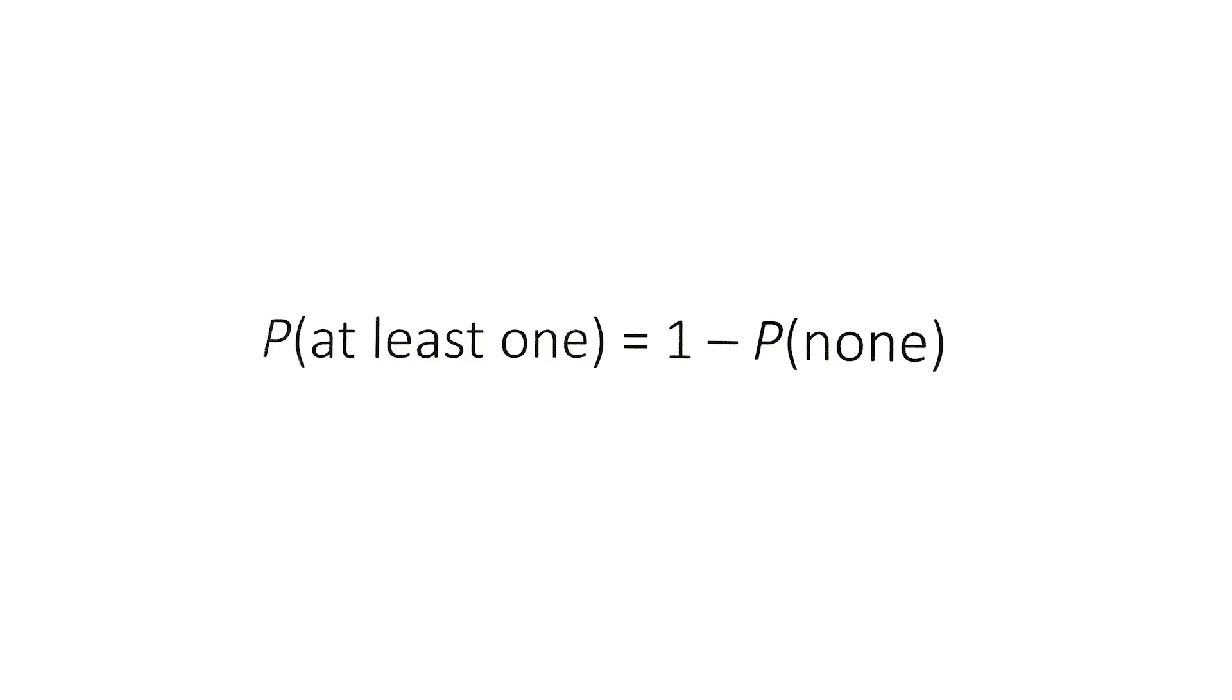So the formula for solving for the probability of at least one is equal to one minus the probability of none occurring.